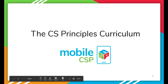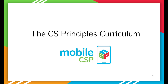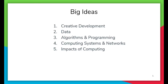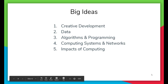Let's talk a little bit about the computer science principles curriculum and how that looks in Mobile CSP. There are five big ideas: creative development, data, algorithms and programming, computing systems and networks, and impacts of computing. So while programming is a key part of computer science, there are actually many different things involved — being creative, looking at data, and examining the impacts of what you create — and this course will cover all of those.